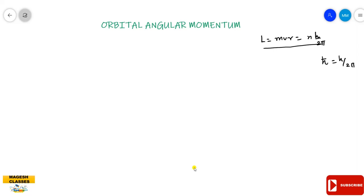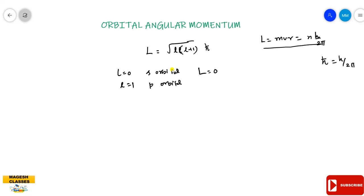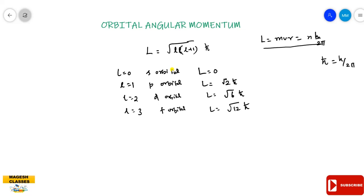But in quantum mechanics, the angular momentum is calculated on the basis of the azimuthal quantum number. It is the square root of l(l+1) times h-bar. For l equal to 0, it is the s orbital and the angular momentum is 0. For l equal to 1, it is the p orbital and the angular momentum is root 2 h-bar. For l equal to 2, it is the d orbital and the angular momentum is root 6 h-bar. For l equal to 3, it is the f orbital and the angular momentum is root 12 h-bar.